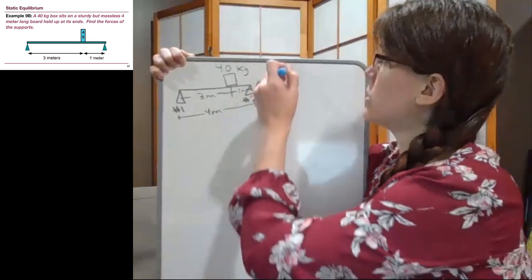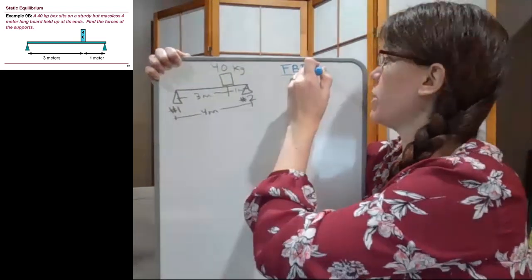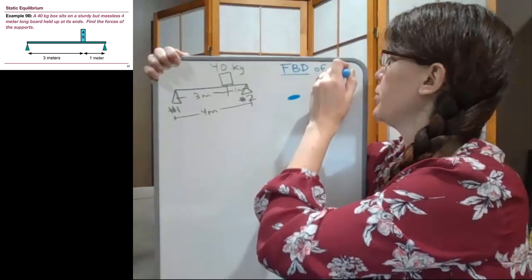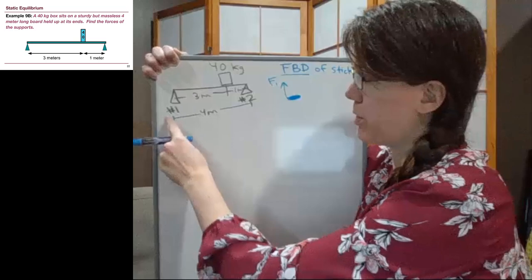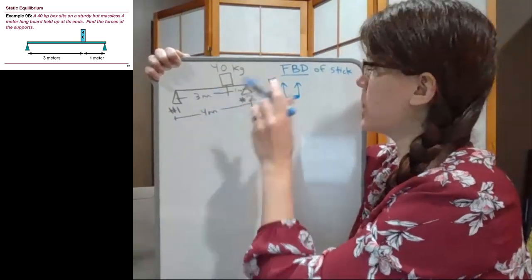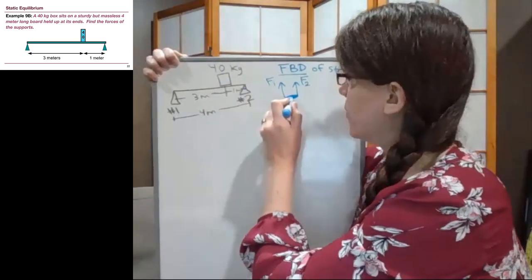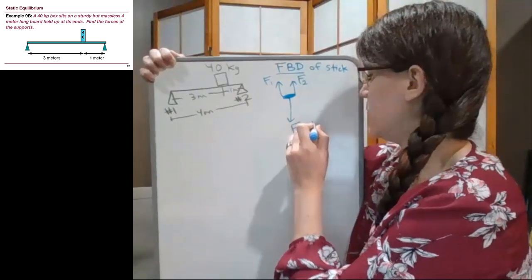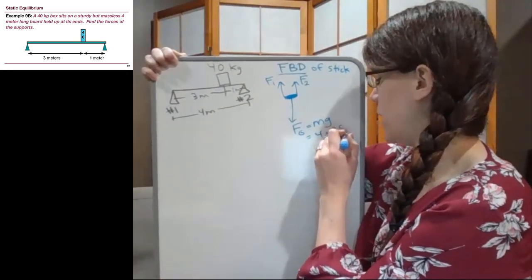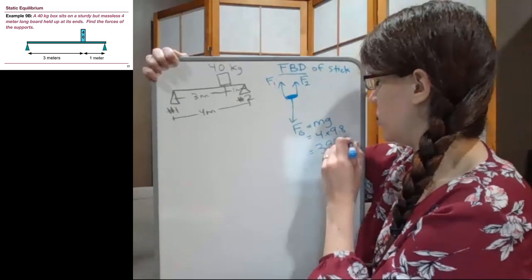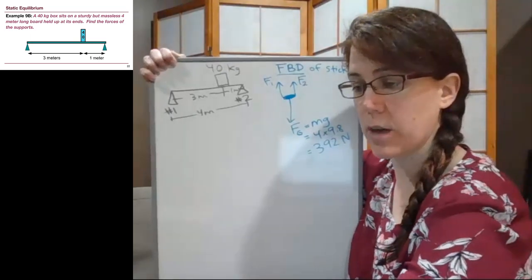We're trying to figure out the forces of the supports, with the block three meters from one end and one meter from the other. The second thing to look at is the forces, so I'm going to draw a free body diagram. The forces on the stick: support one pushing up is F1, support two pushing up is F2, and the weight of the block is mg. Since we're given kilograms and not newtons, we calculate: 40 times 9.8 equals 392 newtons.